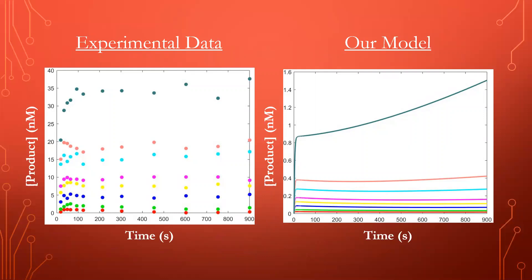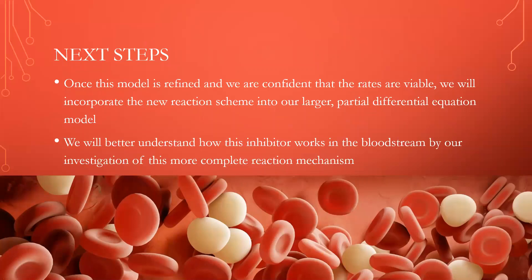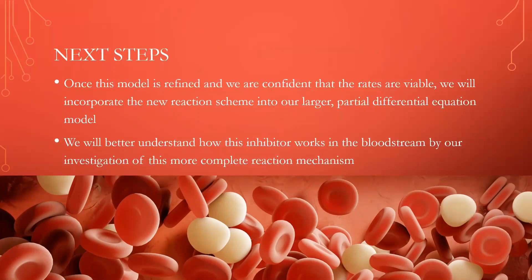We will continue to work on identifying unknown parameters until we are satisfied with the accuracy of this reaction scheme. Once we refine these unknown rates in the model, we will add the new and improved reaction scheme to an existing larger partial differential equation model. Here, we will be able to best understand how the inhibitor works in the bloodstream when flow is present. Ultimately, we believe we are closer to understanding this inhibitor than we were before by investigating this more complete reaction mechanism. Thanks to my advisor, Professor Liederman, for all of her help and guidance, and thanks to you for listening.